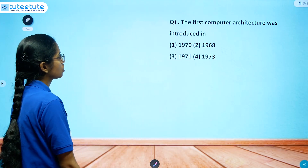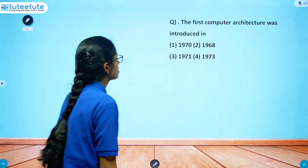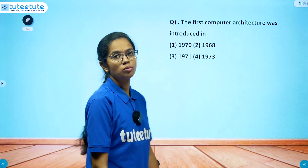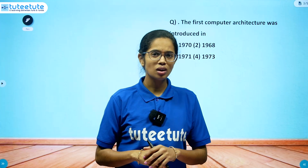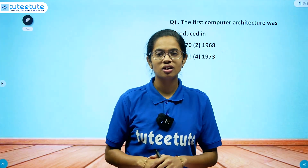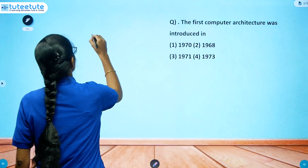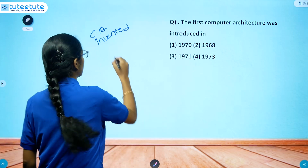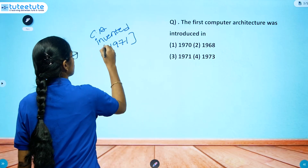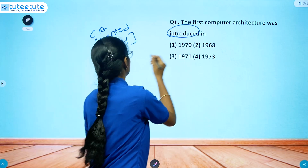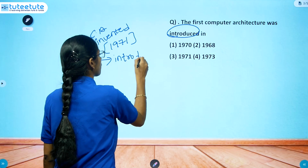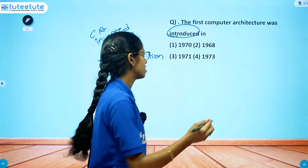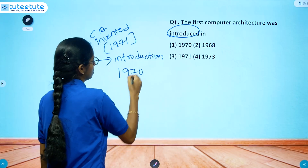Next question: the first computer architecture was introduced in — options: 1970, 1968, 1971, 1973. When was the first computer architecture introduced? Computer architecture was invented in 1971, but coming to its introduction, it was introduced in the year 1970.